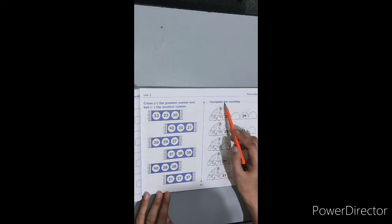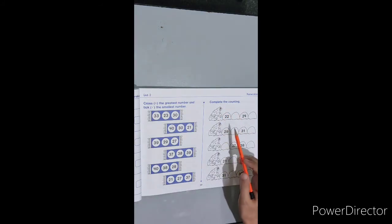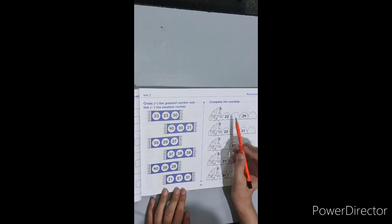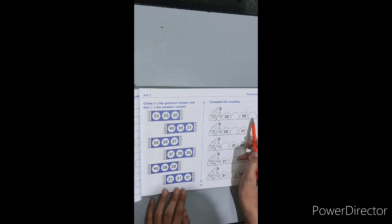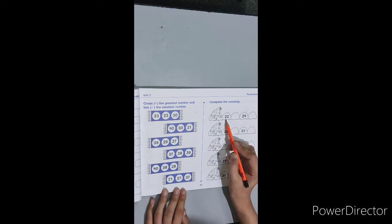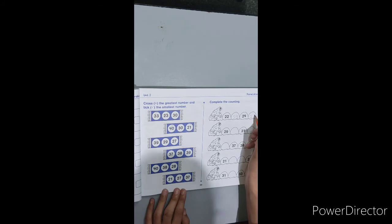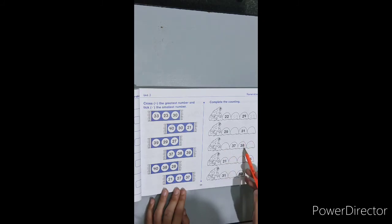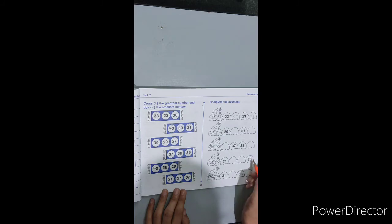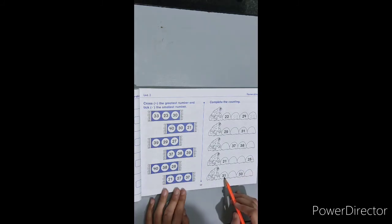Now move to the next part. Complete the counting. 'Complete the counting' means whatever blanks you see, you read from the start and fill in those blanks. For example: 22, blank, 24, blank — we read from 22 onwards: 22, 23, 24, 25. Then: 29, 30, 31, 32. Then: 36, 37, 38, 39. Then: 21, 22, 23, 24. Then: 31, 32, 33, 34. Students, complete this page by yourself.